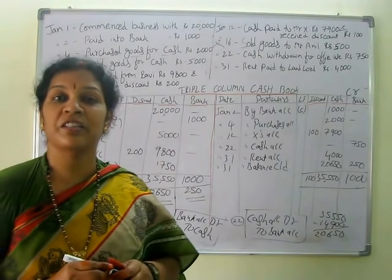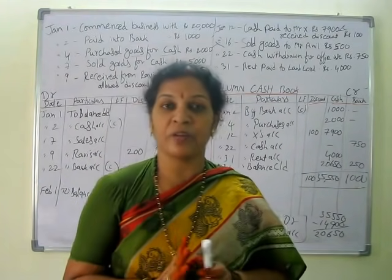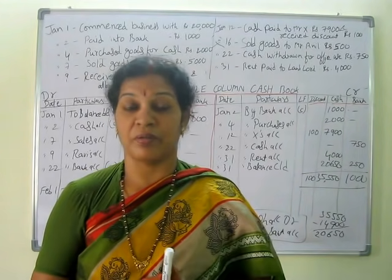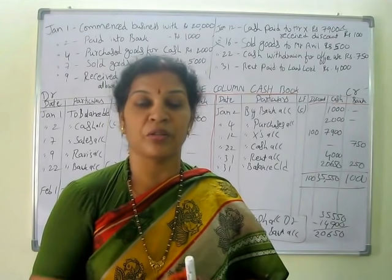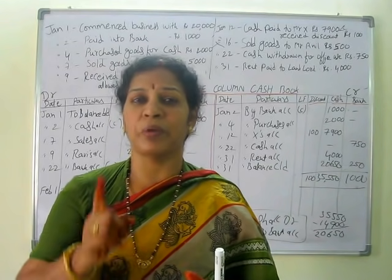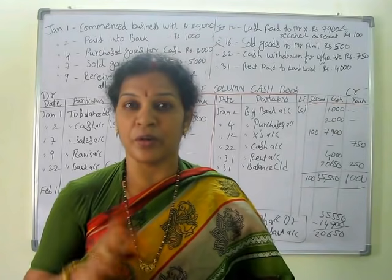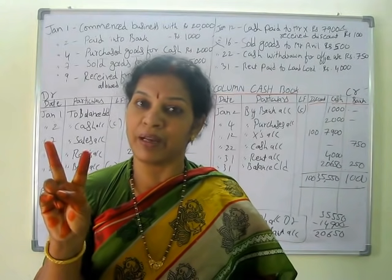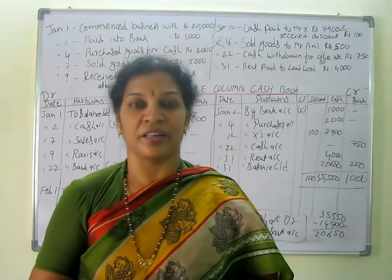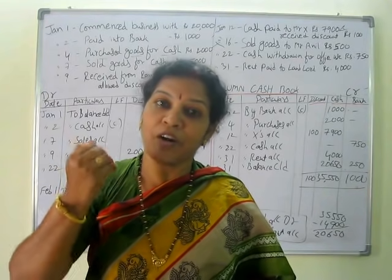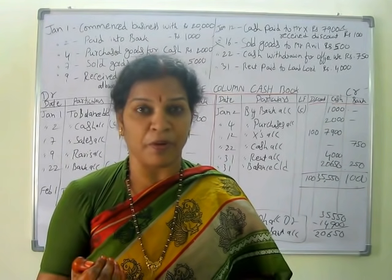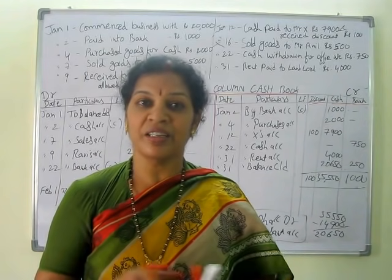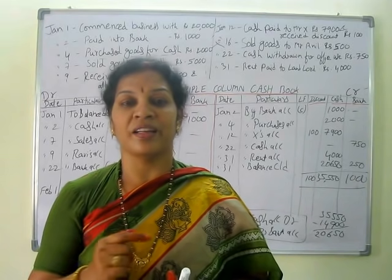This is the triple column cash book. Please remember — you must be very careful about the contra entry. Whenever you receive an amount with discount, post the discount in the discount column. Posting of discount is straightforward. The main thing to remember is the contra entry. Contra entry occurs only in two cases: one, when an amount is deposited into the bank — bank account debit to cash account; two, when you withdraw for office purpose — cash account debit to bank account. Whenever cash and bank appear together in one entry, that is a contra entry.